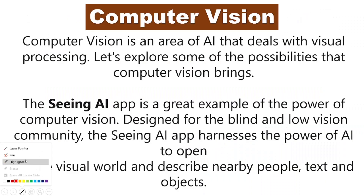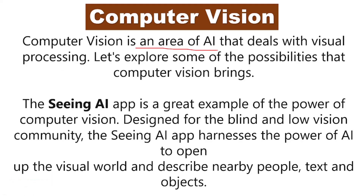What is computer vision? Computer vision is an area of artificial intelligence that deals with visual processing — visual means which we can see.